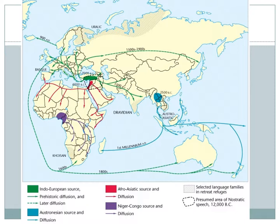On the map, you can see the Afro-Asiatic language family in red. That diffused — and more specifically, the language of Arabic — it spread with the diffusion of Islam.